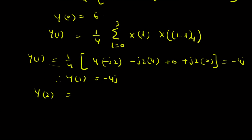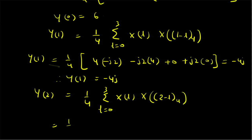For k = 2, Y(2) is given by (1/4) times the summation from l = 0 to 3 of X(l) times X((2 − l) mod 4). The terms are: l = 0 gives X(0) × X(2) = 4 × 0 = 0; l = 1 gives X(1) × X(1) = (−j2)(−j2) = −4; l = 2 gives 0; l = 3 gives X(3) × X(−1 mod 4) = j2 × j2 = −4. Upon simplification Y(2) = −8/4 = −2.